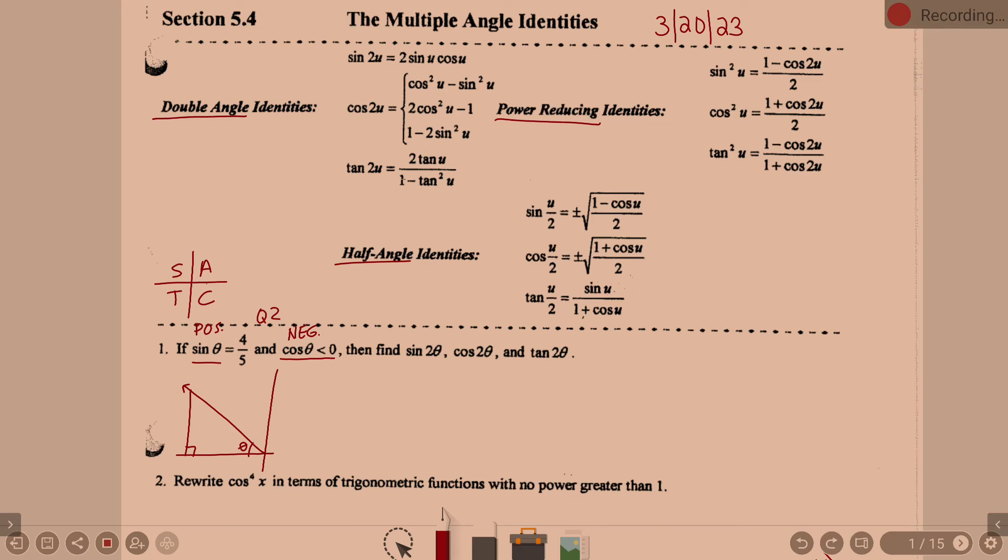Sine is four-fifths, so what did we know from sine is four-fifths? That four is your opposite, and five is your hypotenuse. Okay. Due to SOHCAHTOA, we know that four is my opposite, five is my hypotenuse.